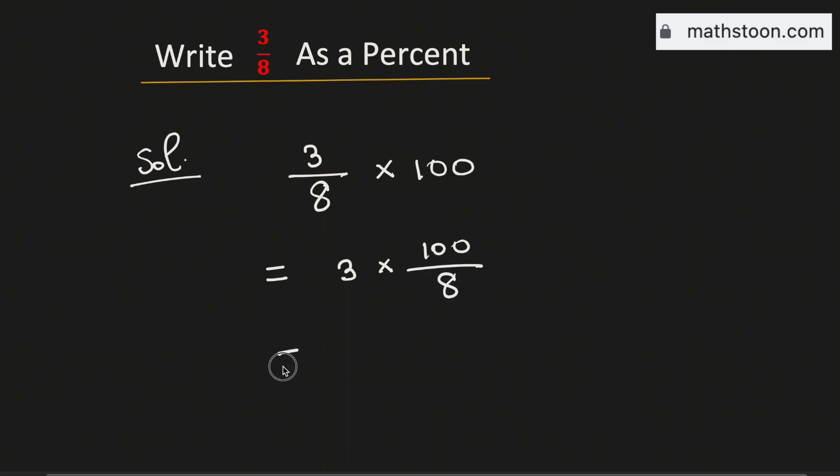This is now equal to 3 times. Now 8 goes into 100 by 12 and 8 times 12 is 96.